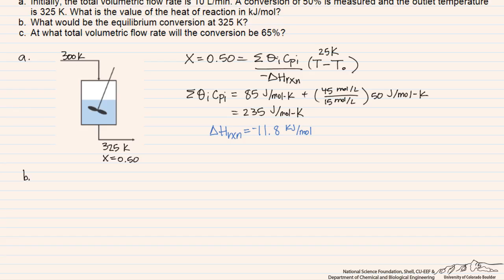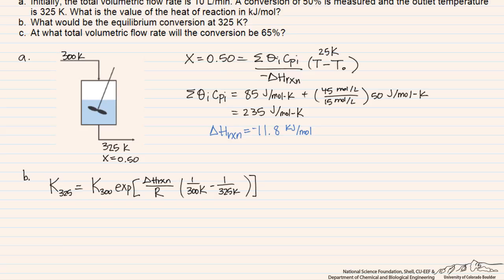In part B, we want to determine what the equilibrium conversion would be at 325 Kelvin. We recognize that we've actually achieved a conversion of 50%, so the equilibrium conversion — what we'd get in an infinitely sized reactor — should be greater than 50%. To determine this, we need the equilibrium constant at 325 Kelvin. We're given a value of 12 at 300 Kelvin, and we can use the van't Hoff relationship where the equilibrium constant at the new temperature equals the known value times the exponential of ΔH_rxn over R multiplied by a reciprocal temperature difference.